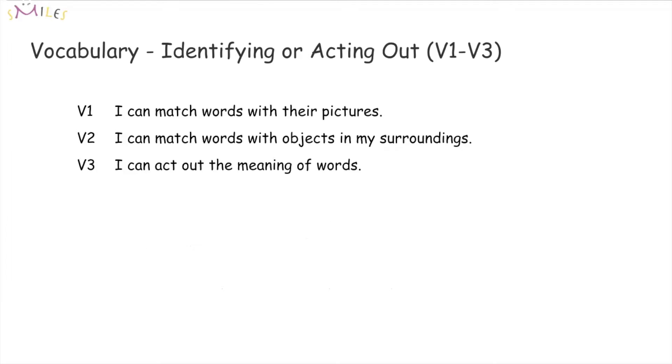The first set of learning outcomes are those assessed by either identification or acting out. V1 and V2 require students to identify a picture or an object in order to demonstrate that they know the meaning of a given word. V3, on the other hand, requires students to act out the word.